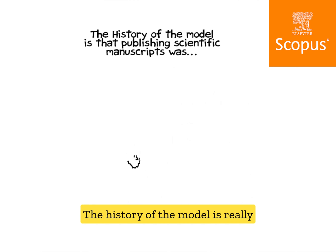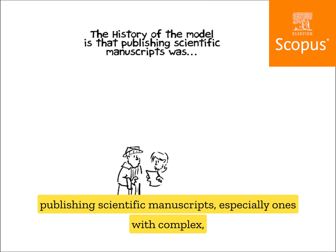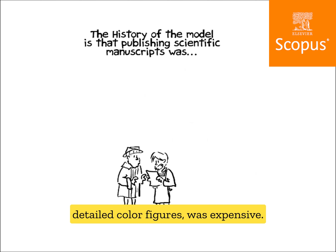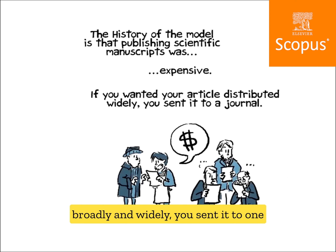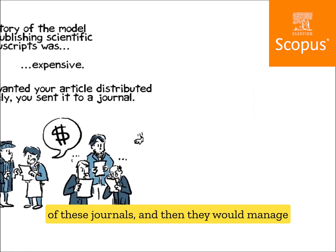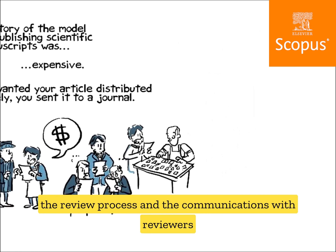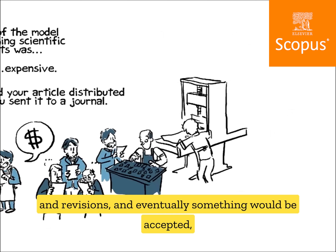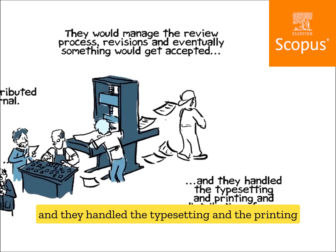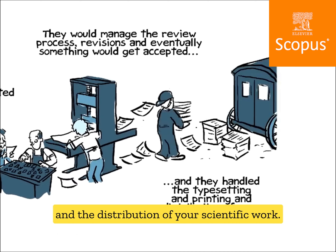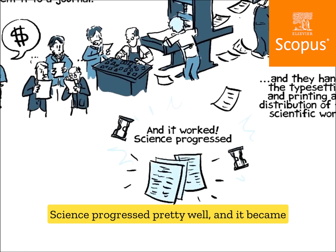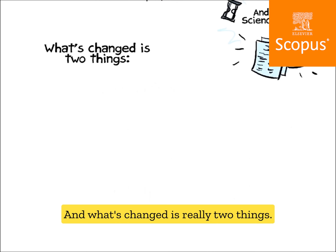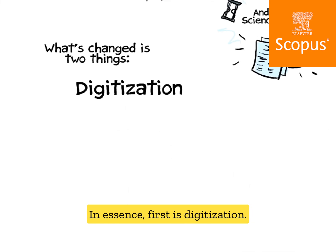The history of the model is that publishing scientific manuscripts — especially ones with complex, detailed color figures — was expensive. So if you wanted your article distributed broadly and widely, you sent it to one of these journals, and they would manage the review process, communications with reviewers, revisions, typesetting, printing, and distribution. It worked great; science progressed pretty well.